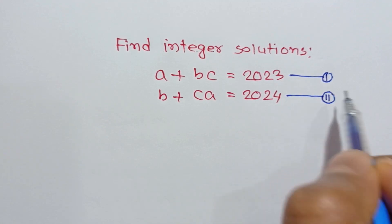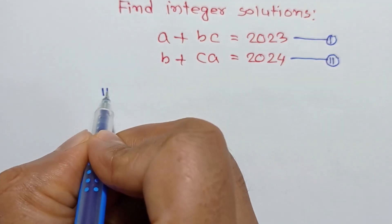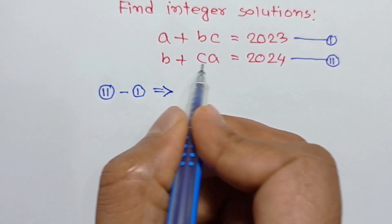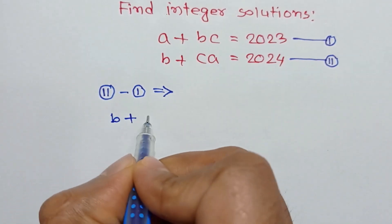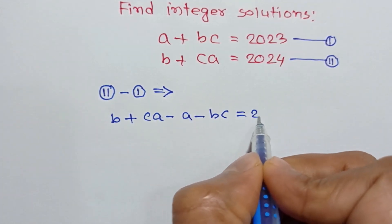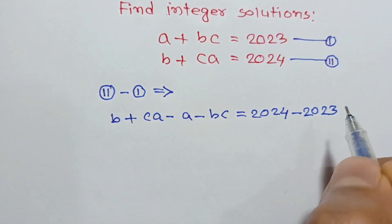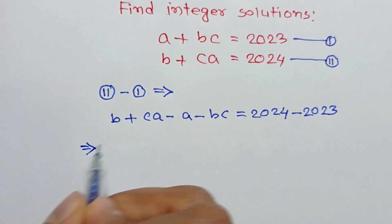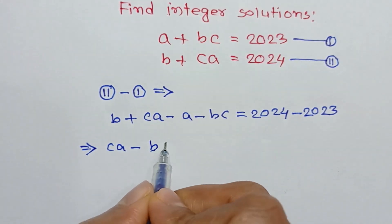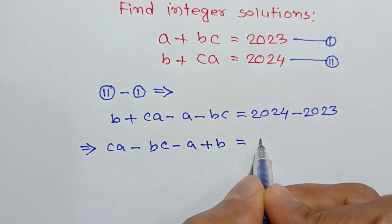Now if we subtract equation one from equation two, we can write b plus ca minus a minus bc is equal to 2024 minus 2023. Or if we rearrange it, we can write ca minus bc minus a plus b is equal to one.